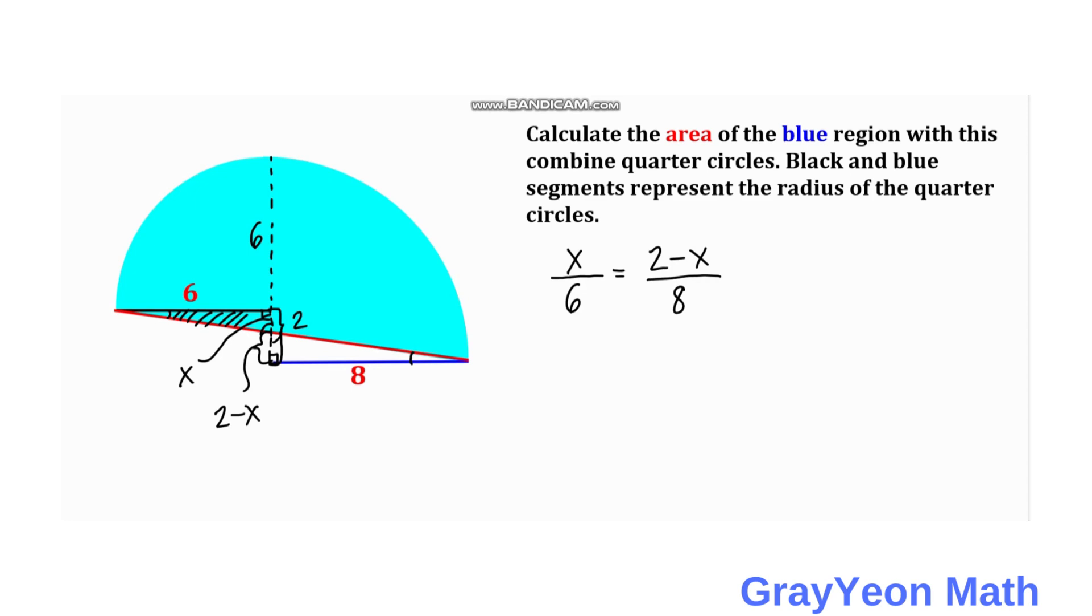If we cross multiply, we have 8x equals 6 times (2 minus x), or 8x equals 12 minus 6x. So 8 plus 6 equals 14, so 14x equals 12. If we divide both sides by 14...